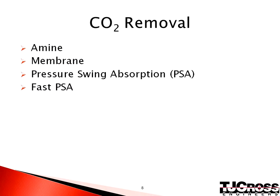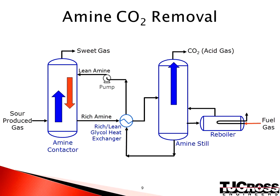Carbon dioxide, or CO2, is another common inert found in produced gas which must be removed prior to fuel or sales. Common removal techniques include amine systems, membrane removal, pressure swing absorption also known as PSA, or fast PSA techniques. In most cases, CO2 must be reduced to below 3%. In an amine system, the sour gas is introduced into a contactor, which circulates lean amine counter-current to the gas. The amine strips the gas of the CO2. The rich amine is then heated in a heat exchanger and regenerated by boiling out the CO2 gas.